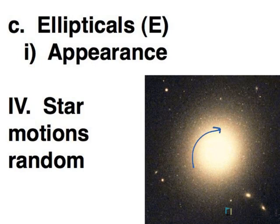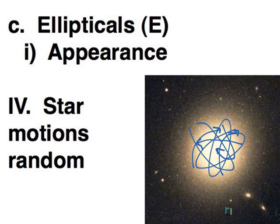The stars move in random directions. They all orbit the center, but they all move in their own unique paths around the center.